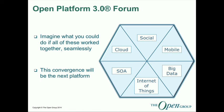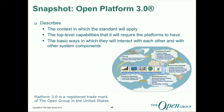Open Platform 3.0 is the nexus of forces — the convergence of social, mobile, cloud, big data, and the Internet of Things. Imagine what we could do if all of these worked seamlessly together. We've for a long time done things in the SOA area adopted by ISO, done cloud work with the reference architecture and governance model partly adopted by ISO. Internet of Things — we've published standards, which I'll talk about.